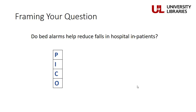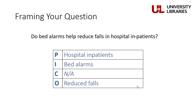The great thing about PICO is that it's not just a way to frame a question — it also helps you generate the terms you'll need when you're searching. For instance, if we're interested in finding out if bed alarms help reduce falls in hospital inpatients, breaking down our question into PICO components would look something like this. Hospital inpatients are our population, bed alarms are our chosen intervention, and our targeted outcome is reduced falls.